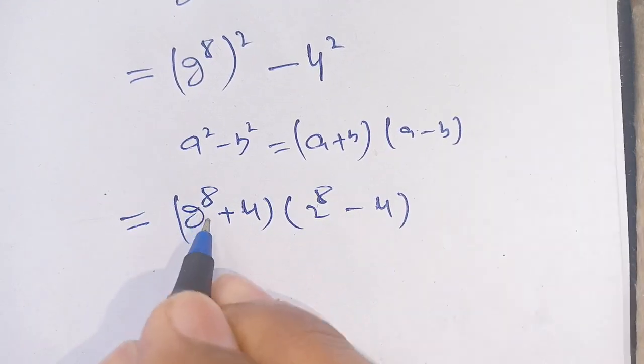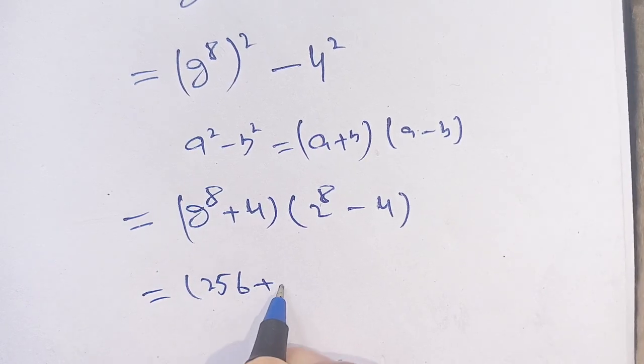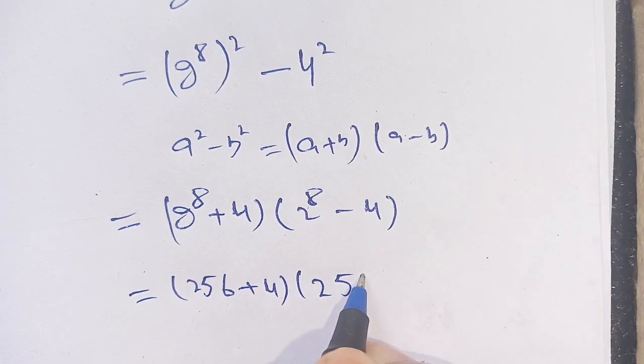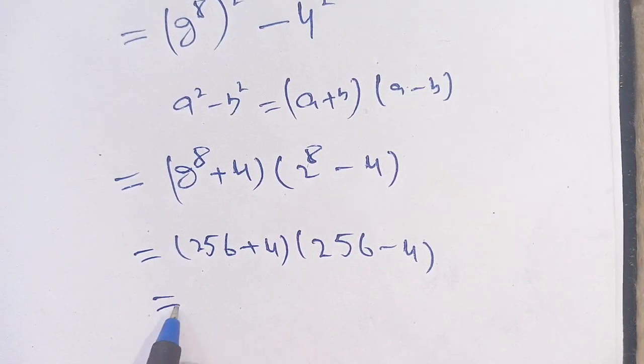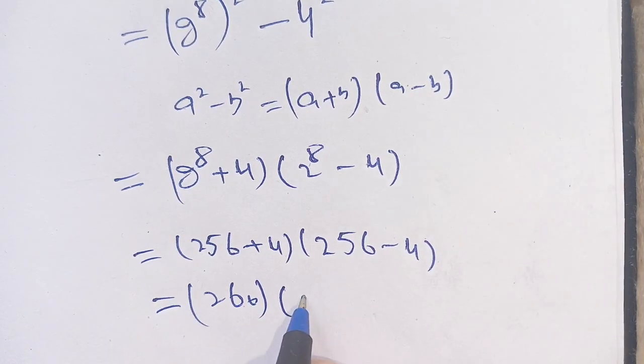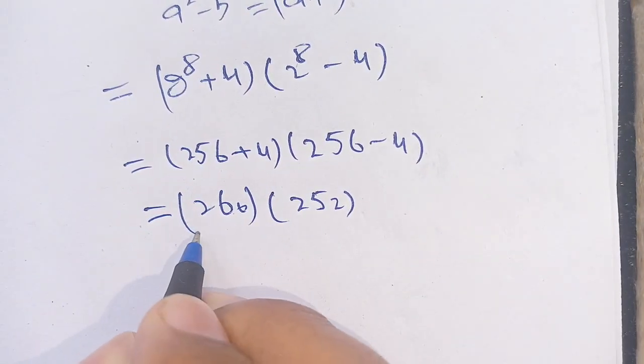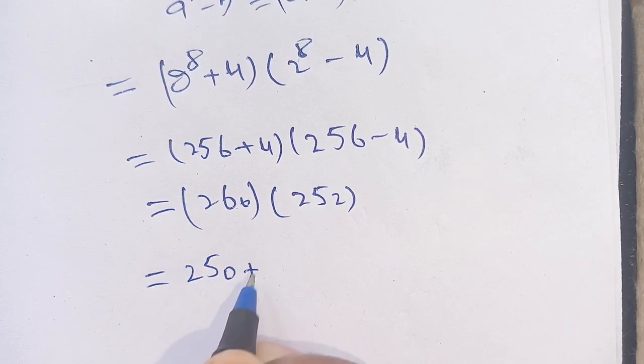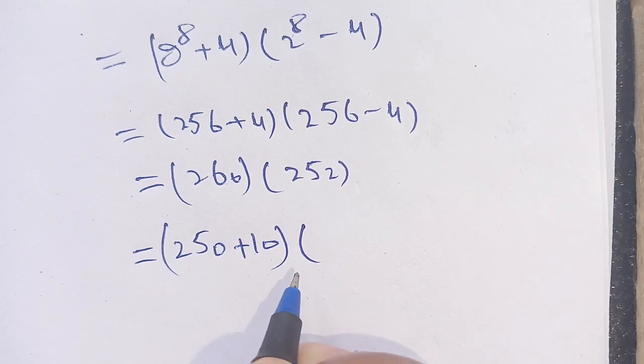Now, 2^8 equals 256, so this becomes (256 + 4)(256 - 4), which is 260 times 252. We can break down 260 as 250 plus 10, and 252 as 250 plus 2.